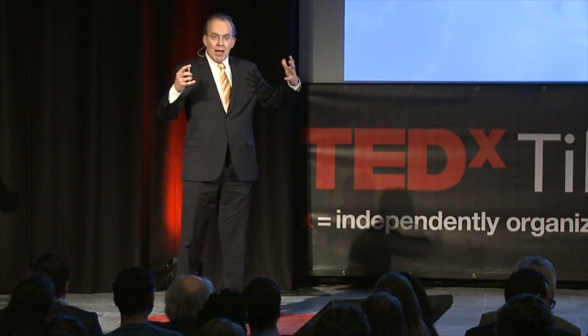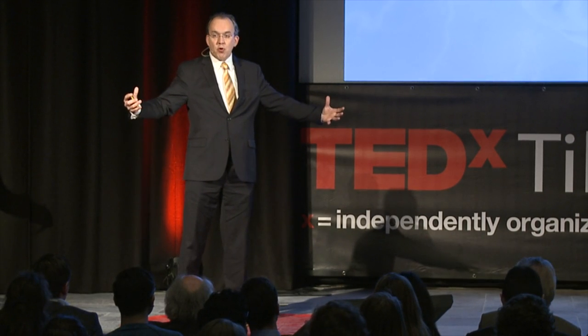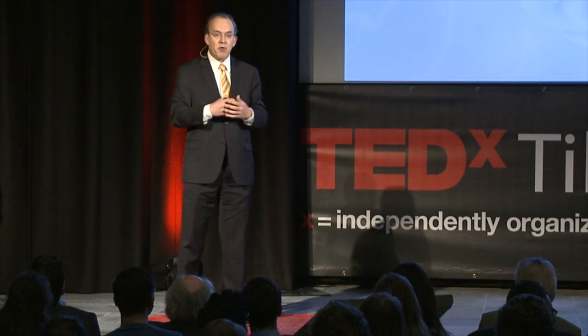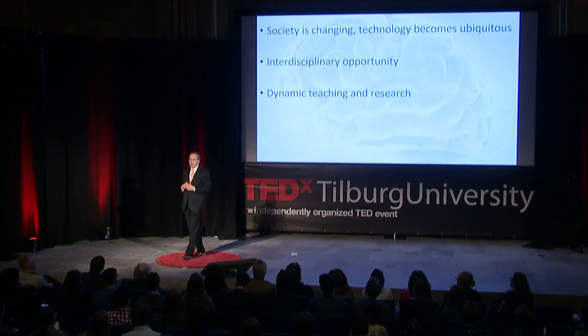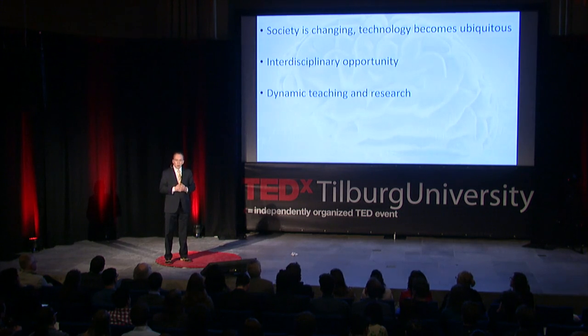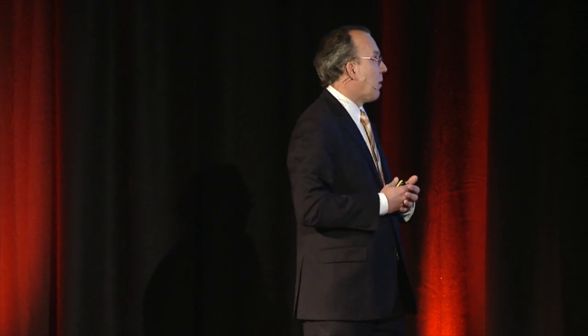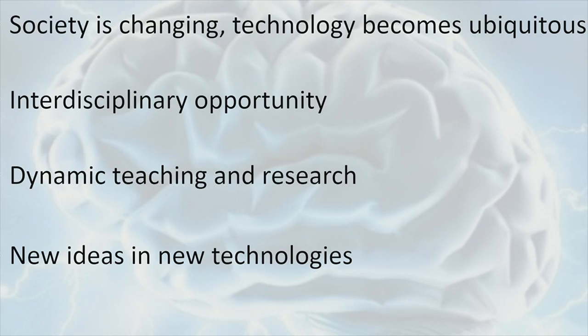This university has schools such as economics and management, social and behavioral sciences, humanities, law, and theology. This interdisciplinary lab provides students from different schools with a unique opportunity to work together. It allows researchers to work together and provides a dynamic teaching and research environment — not a classroom where you throw information at the student, but where students are interacting with the environment. And finally, it provides us with new ideas and technology. I'm convinced that new ideas within technology come from perspectives on the technology, and this university, together with technical universities, is uniquely placed to make that progress.